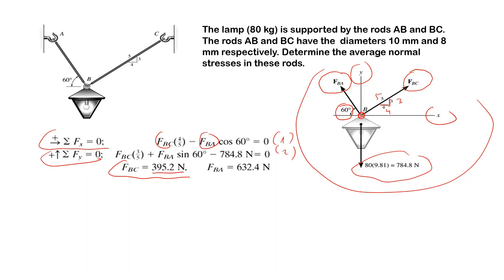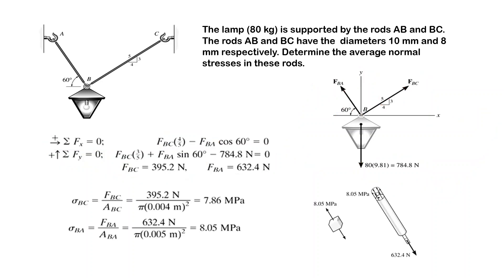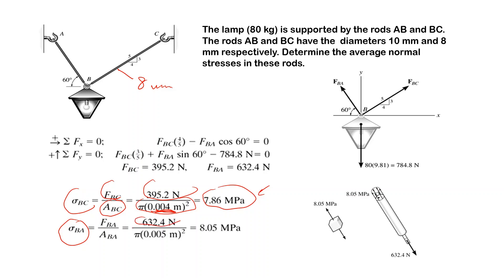Solving the two equilibrium equations, we find that force BC is 395 N and force BA is 632 N. Next, we calculate the stress in rod BC: force BC divided by the cross-sectional area of BC. BC has a diameter of 8 millimeters, so we use its radius in meters, giving a result of 7.86 megapascals. For rod BA: force BA divided by the cross-sectional area, with diameter 10 millimeters (radius 0.005 meters), giving a stress of 8.05 megapascals.